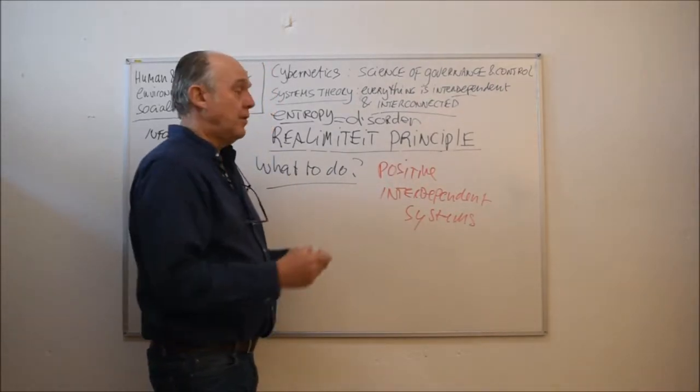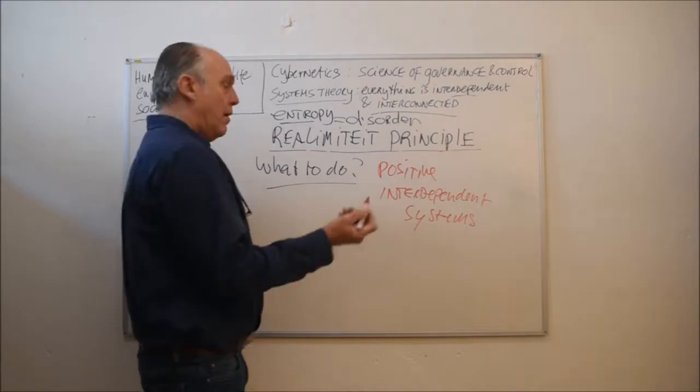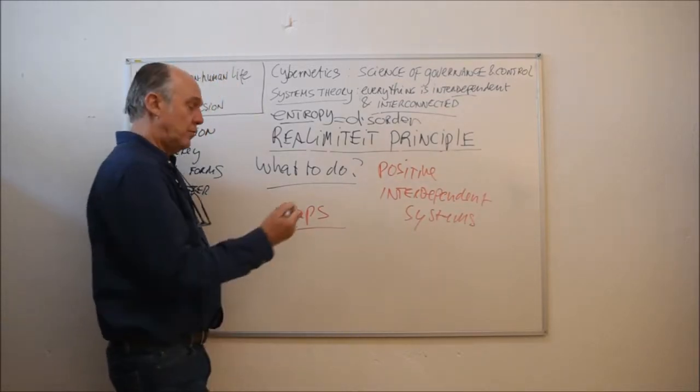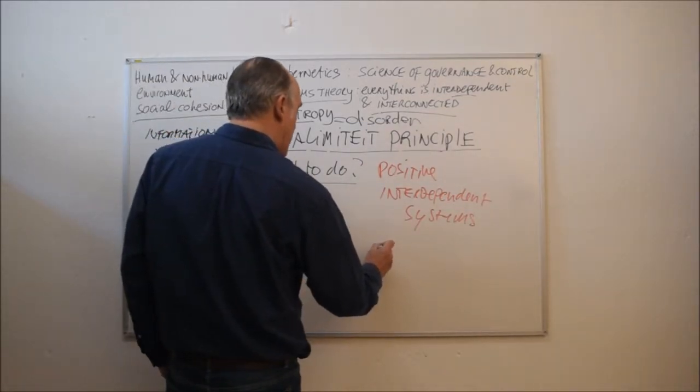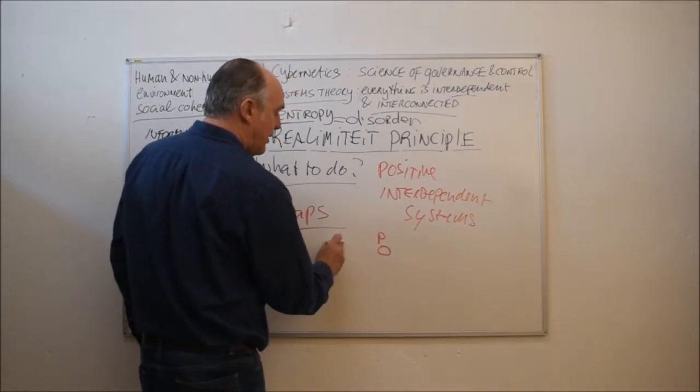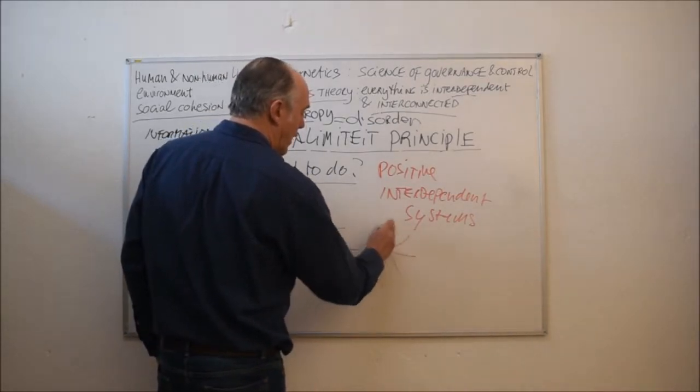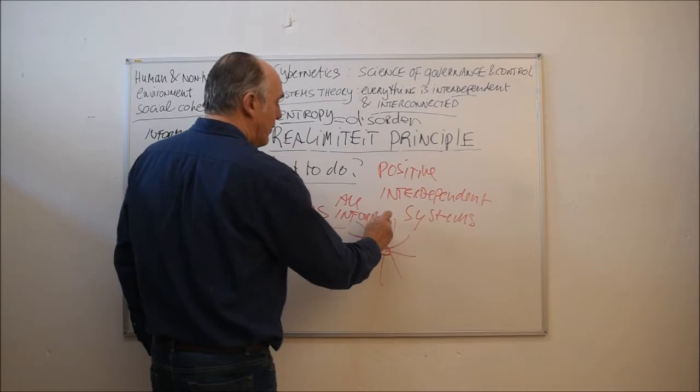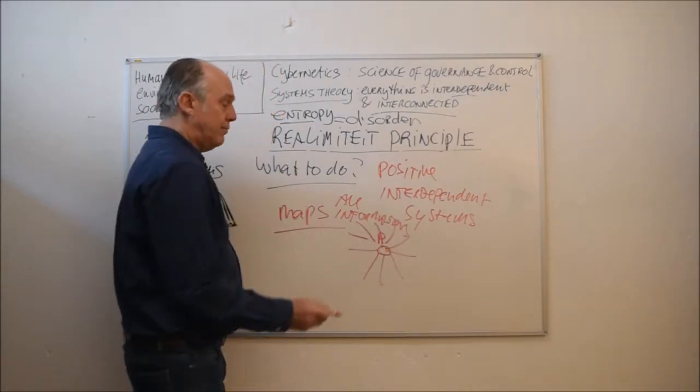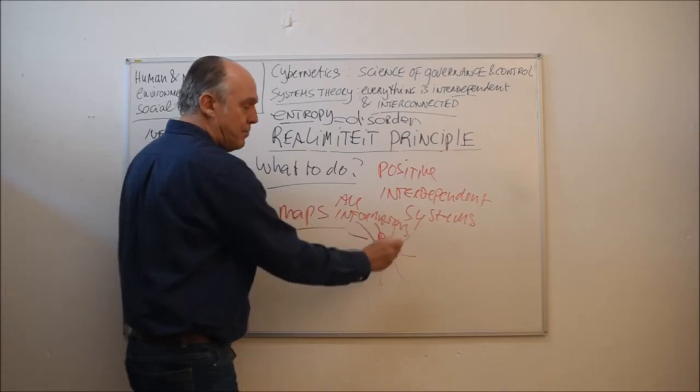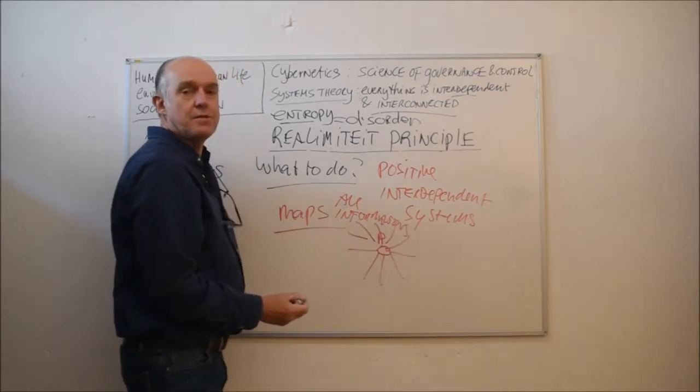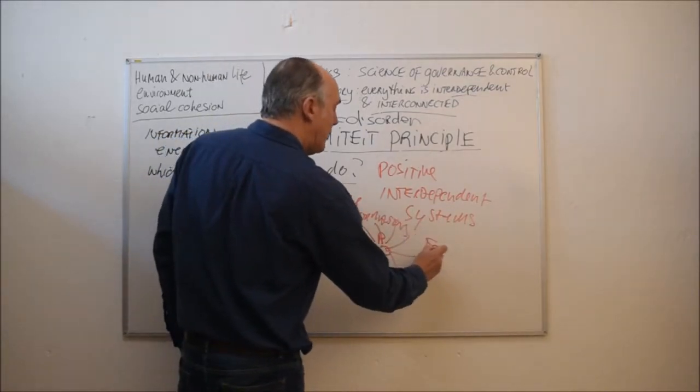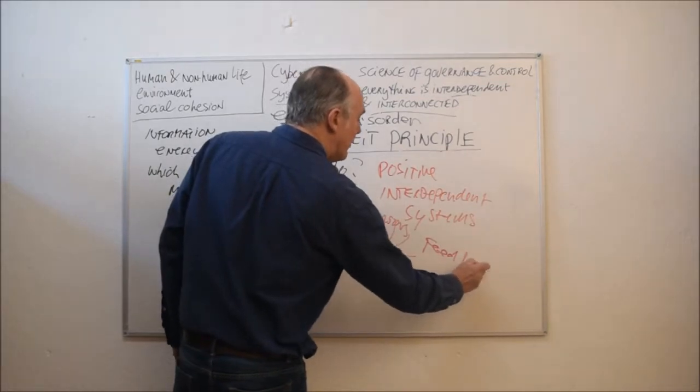Designing positive interdependent systems can be done by drawing maps. Maps of interaction, communication. We have a purpose, and for this purpose, all information is needed. All the parts in the system, all the individual parts of the system need to be linked by these things called feedback loops.